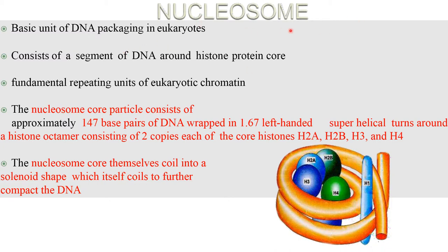A nucleosome is the basic unit of DNA packaging in eukaryotes. It consists of a segment of DNA around a histone core protein and is the fundamental repeating unit of eukaryotic chromatin. The nucleosome core particle consists of approximately 147 base pairs of DNA wrapped in 1.67 left-handed supercoil turns around a histone octamer consisting of two copies each of core histones H2A, H2B, H3, and H4. The nucleosome cores themselves coil into a solenoid shape, which itself coils to further compact the DNA.